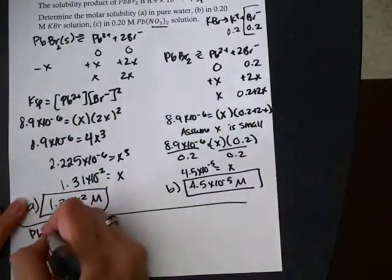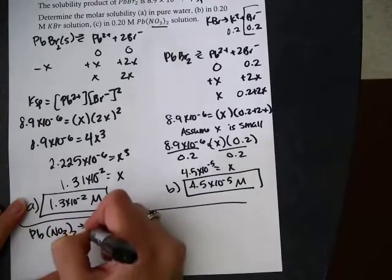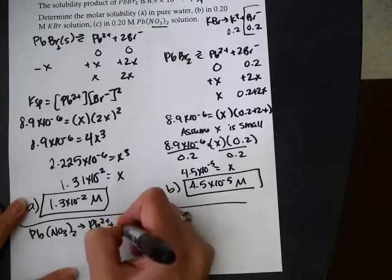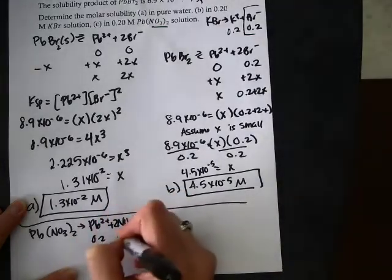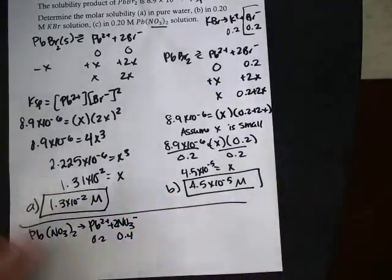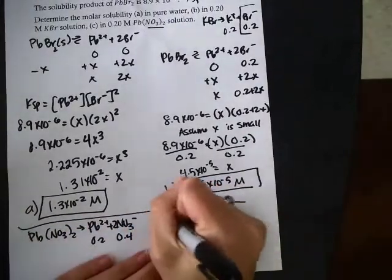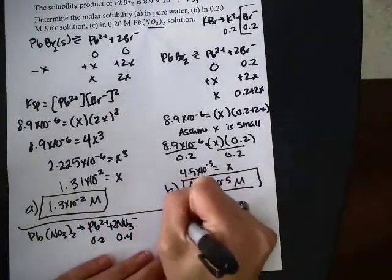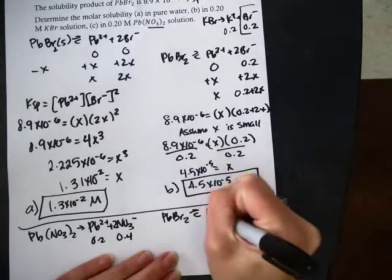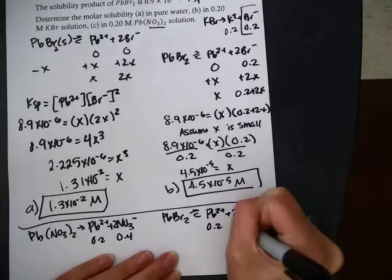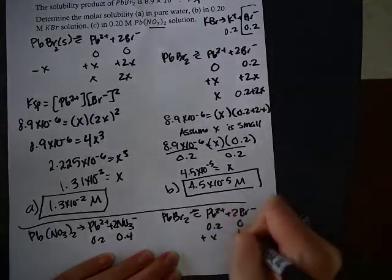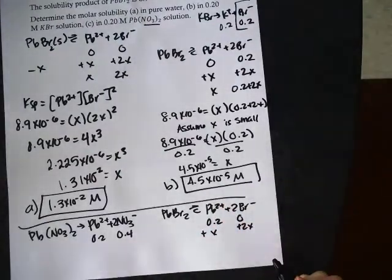All right, so now let me do it with the lead nitrate. So this would separate into one lead, two nitrates. 0.2 molar would then give me 0.2 molar of lead and 0.4 molar of nitrate. This time, the only thing that would interact is the lead, so that's all I care about. And this time when I do it, I have 0.2 for lead. For the starting amount, bromine is still 0.